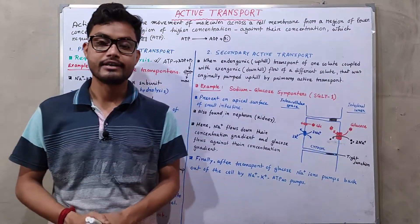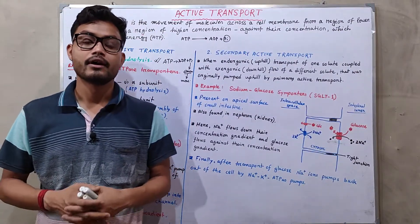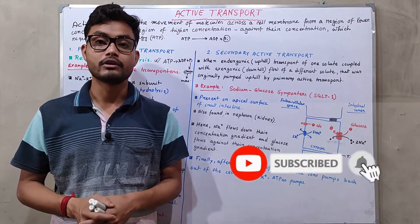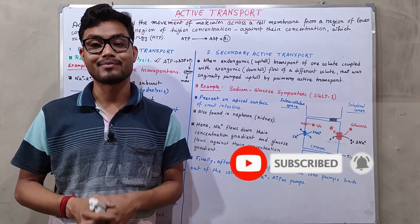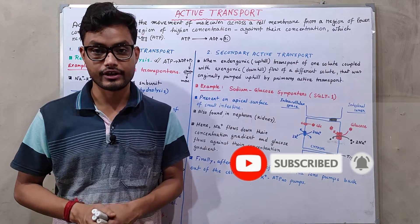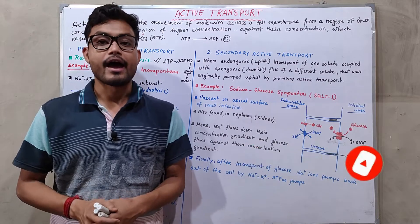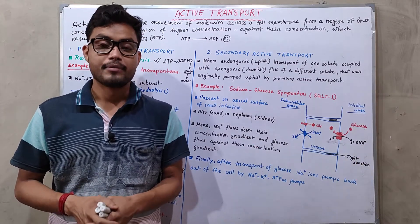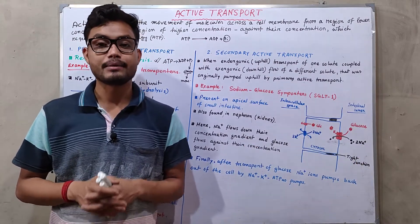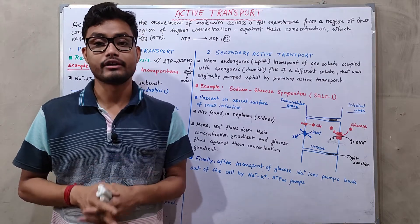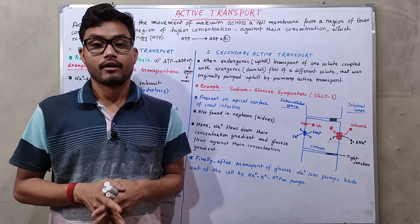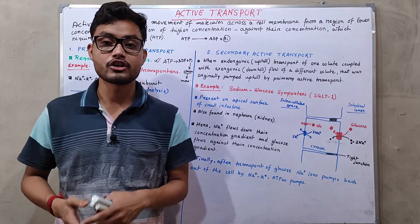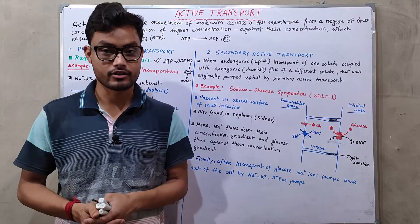Active transport is a mode of cellular transport where a molecule can cross the plasma membrane against their concentration gradient, and in this process ATP is needed. Basically, ATP gives the energy to the molecule for transportation from lower concentration to higher concentration.